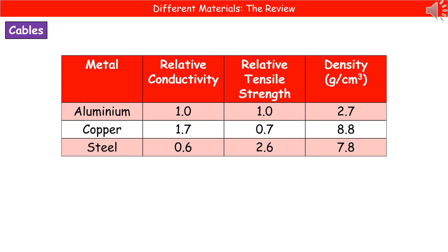Because the cable is overhead, we want something with a low density, so something like copper wouldn't be a great idea. We also need it to have a high conductivity and a relatively high tensile strength. Going down the list, you'll probably find that aluminium is the best bet here. It may not have the best tensile strength, but it has good relative conductivity, a good tensile strength, and a low density.